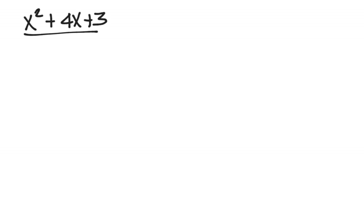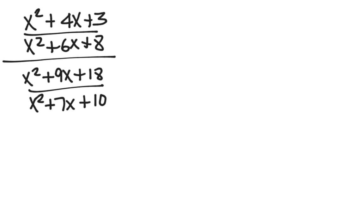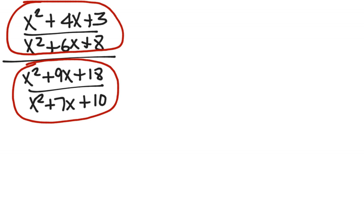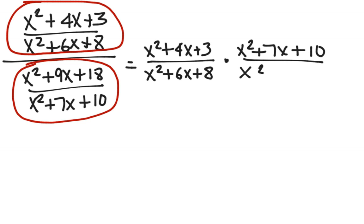Seeing another complex fraction — this one is x squared plus 4x plus 3 divided by x squared plus 6x plus 8, over x squared plus 9x plus 18 divided by x squared plus 7x plus 10. Usually when a complex fraction is written out or typed out, the fraction bar dividing the two fractions is either bolded or a little bit longer, so sometimes that can help us. Again, I am circling my two individual fractions so I can think of this as the top fraction divided by the bottom fraction. I'm going to rewrite this as a multiplication problem: x squared plus 4x plus 3 over x squared plus 6x plus 8, change division to multiplication, and write the reciprocal of the second fraction — x squared plus 7x plus 10 over x squared plus 9x plus 18.